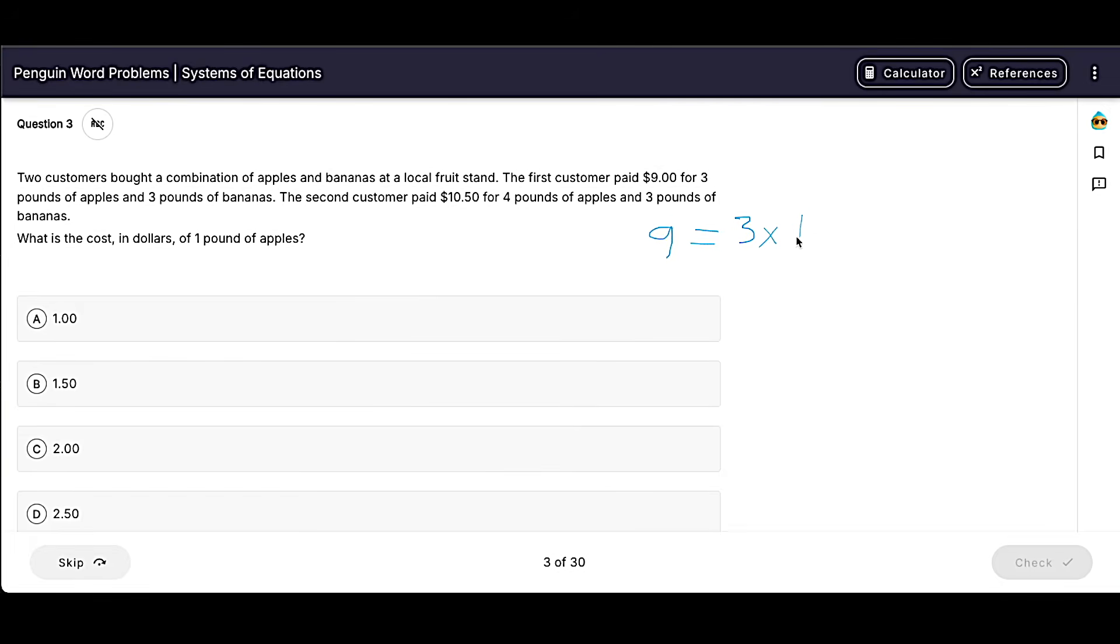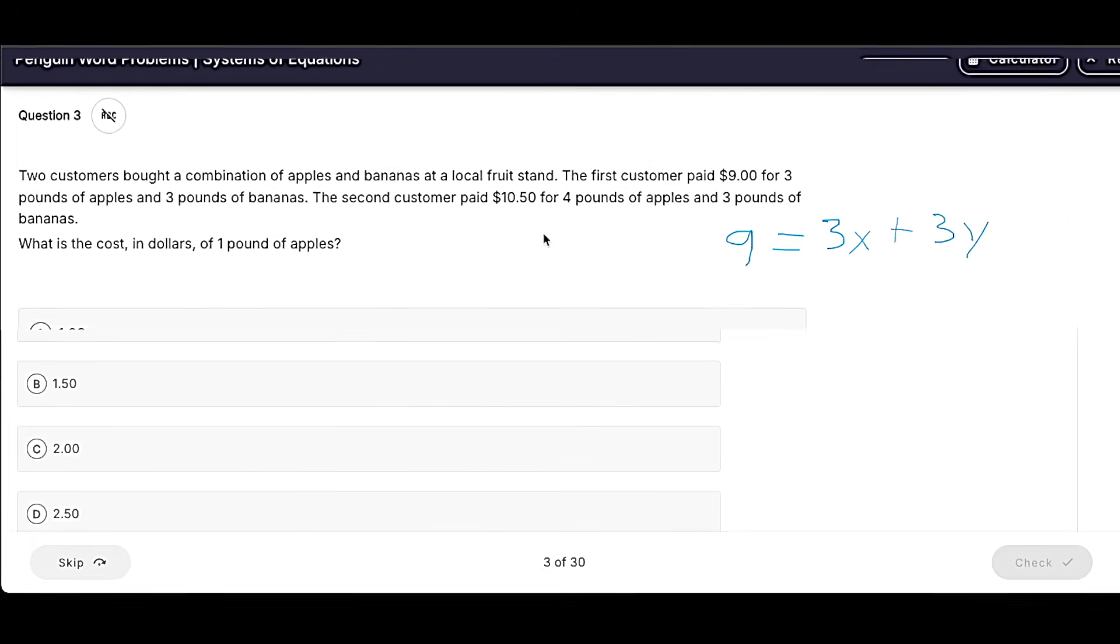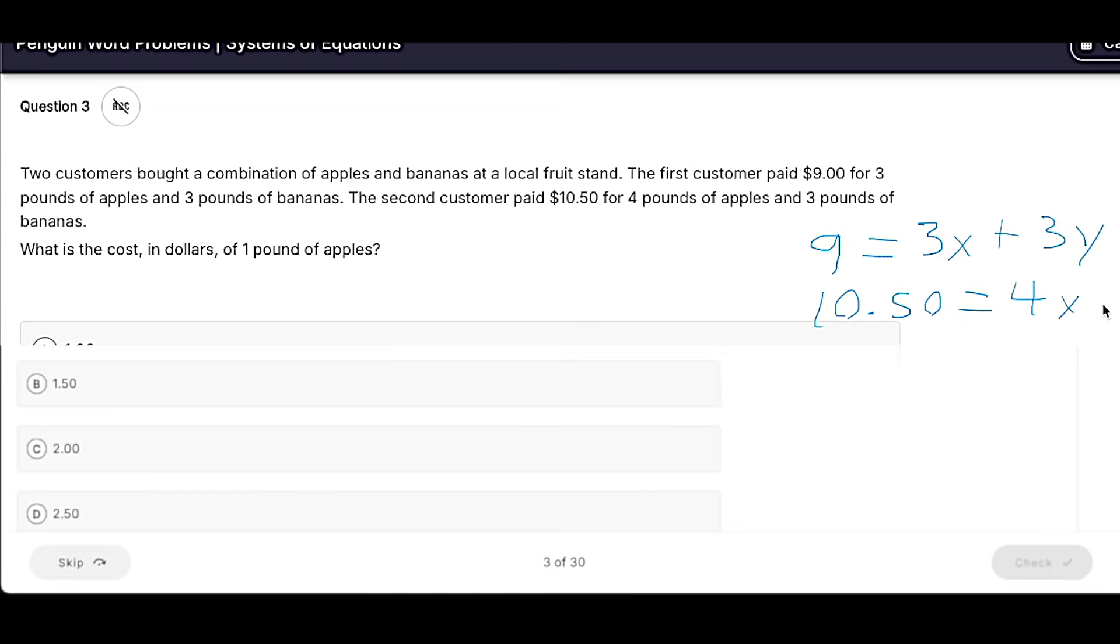So 3X plus 3Y. It also tells us that another customer paid $10.50 for 4 pounds of apples, so 4X, and 3 pounds of bananas plus 3Y.